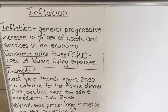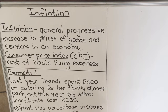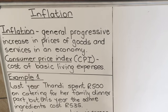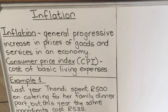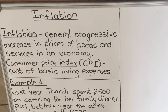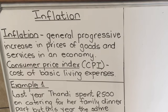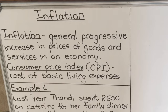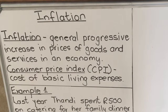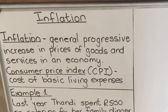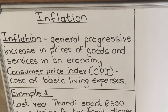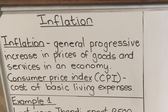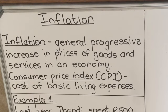Inflation is the general progressive increase in price of goods and services in an economy. When they say general progressive increase, it means every year things will go up — your goods and your services will increase in price. What you could buy with 2000 rands this year, next year it will be less; you need to put in more money. That's the definition of inflation.